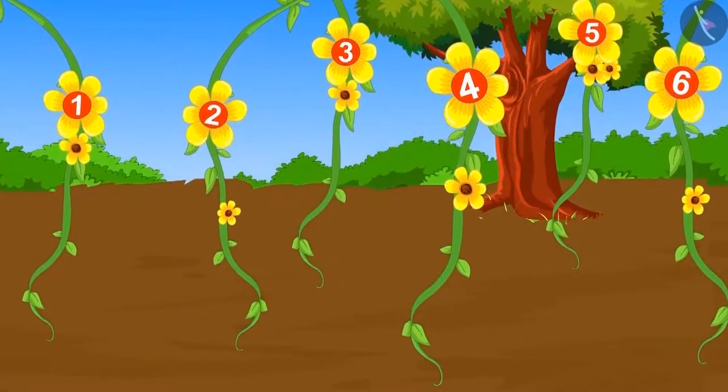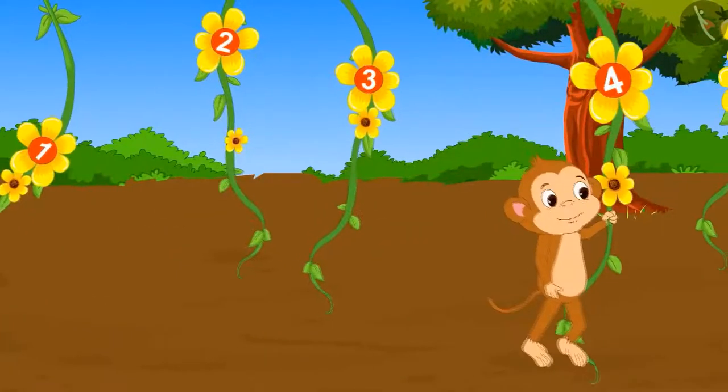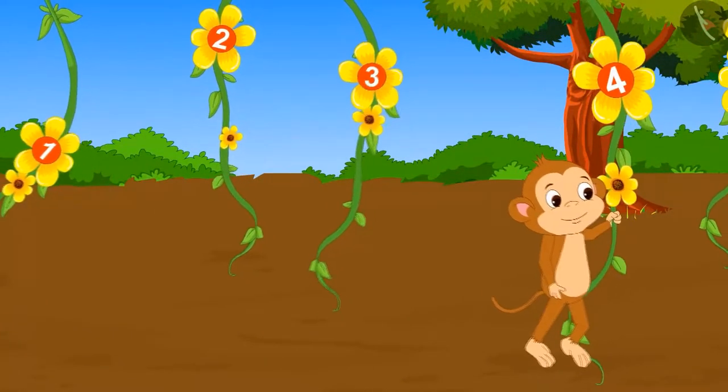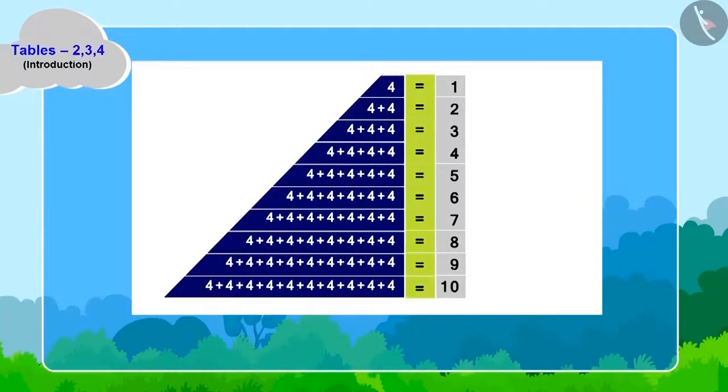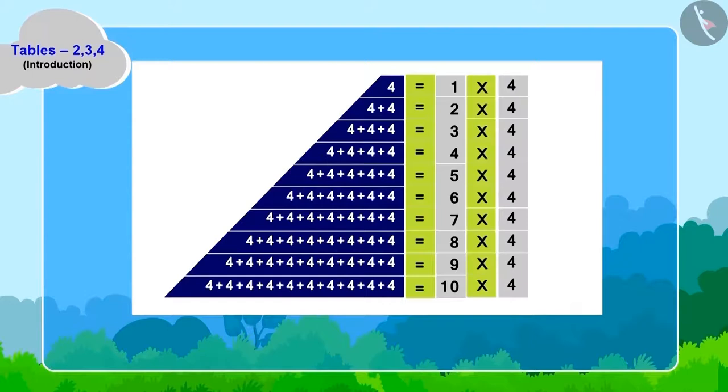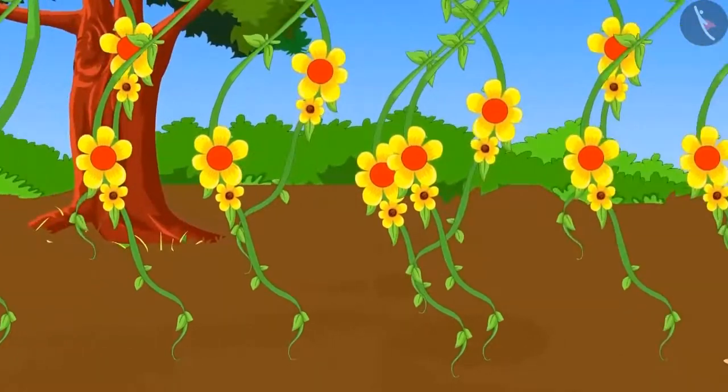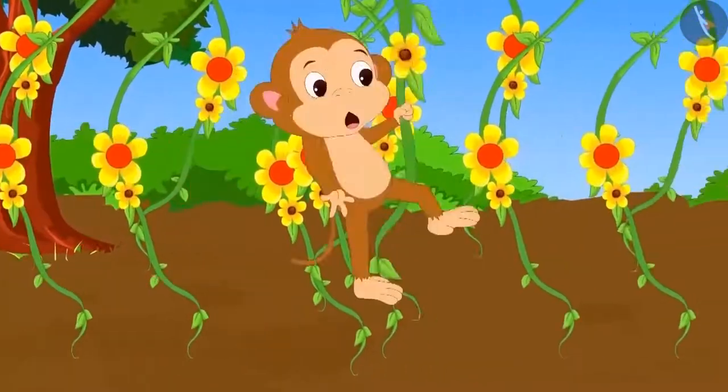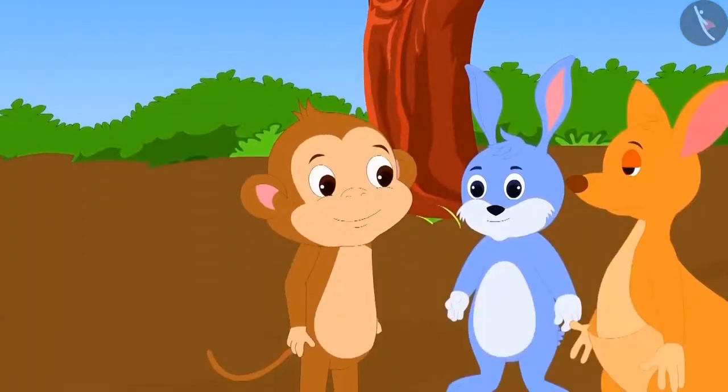Babban can cross four creepers in one jump. He took the first jump and hung to the fourth creeper. Now, can you make the table of four by adding four to each of babban's jump? Oh, wow! Table of four is ready! And like this, by jumping from one creeper to another, babban also crossed the swamp.